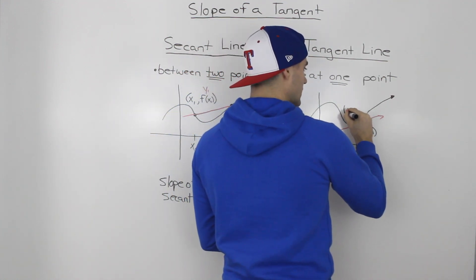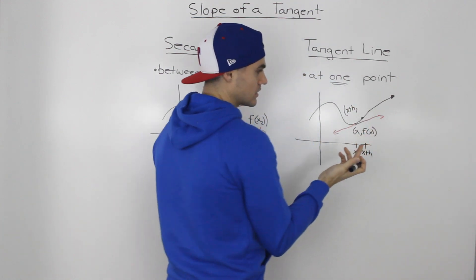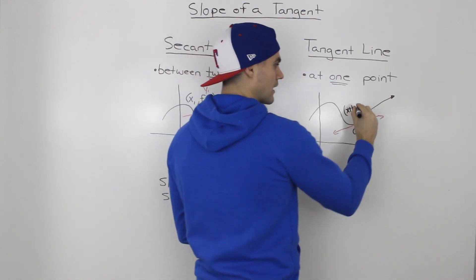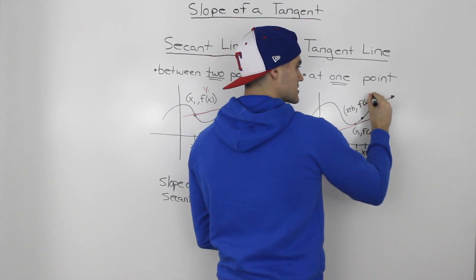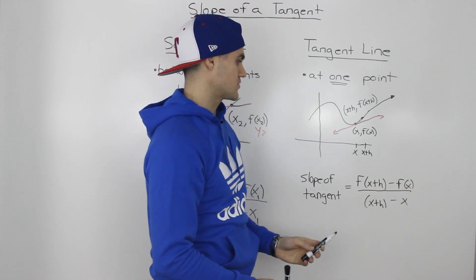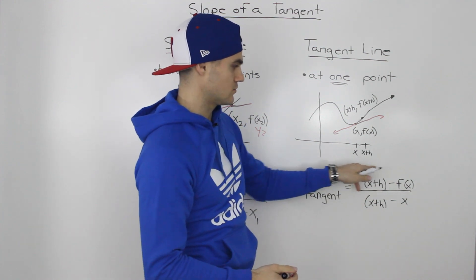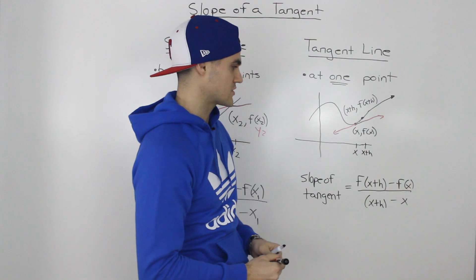Well, the coordinate of it is going to be x plus h. The x value is going to be x plus h, and then the y value is going to be f of x plus h. Well, now since we have two points, we can just use the y2 minus y1 over x2 minus x1 formula.